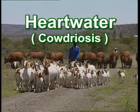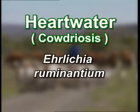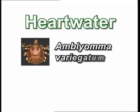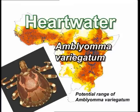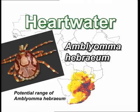Heartwater or cowdriosis is a tick-borne disease of cattle, sheep, goats and some wild ruminants, which is caused by Ehrlichia ruminantium, previously known as Cowdria ruminantium. Heartwater is transmitted by ticks of the genus Amblyomma, the bont ticks, and the major vectors are Amblyomma variegatum, the tropical bont tick, which has the widest distribution in Africa and has also inadvertently been exported to some Caribbean islands, and Amblyomma hebraeum, the South African bont tick, which is the main vector of heartwater in southern Africa.